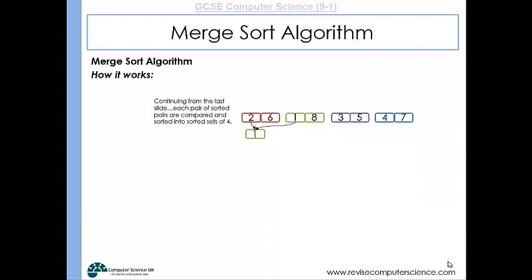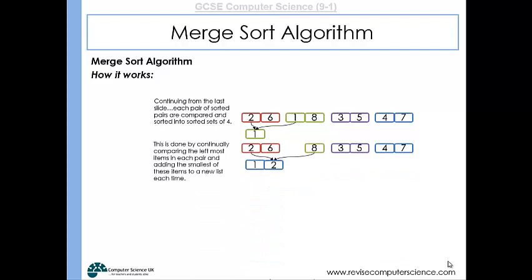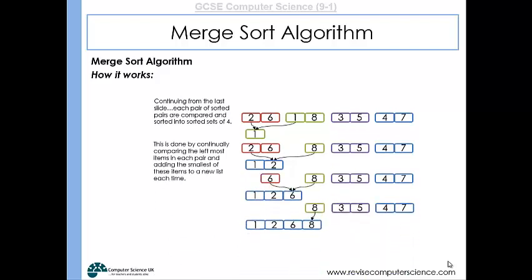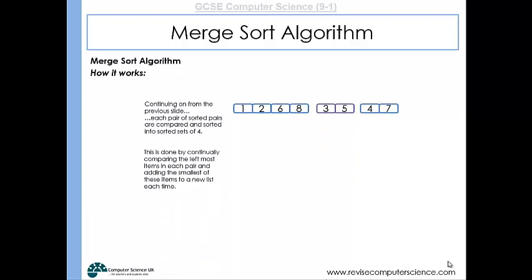What the merge sort will now do is look at a pair of paired numbers and start to put them into a set of four, but in order. The two is compared with the one — the first item in the first pair is compared with the first item in the second pair — and because one is smaller it is brought down first. Then the two is compared with the eight and brought down, then the six is compared with the eight and brought down, and then the eight fills the space. So now we've got a pair of pairs reordered into a set of four.